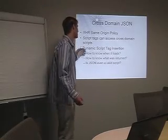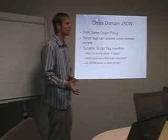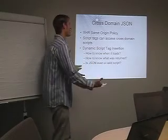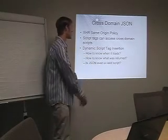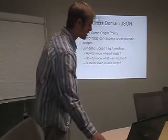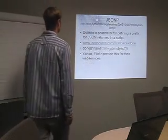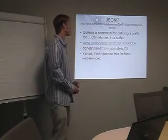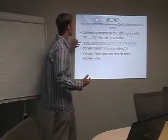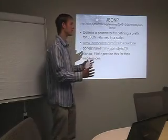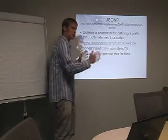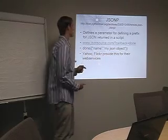Script tags can access across domains, but there's difficulty in using them in that it just loads JavaScript — you don't know when it loaded, you don't know what was in that JavaScript, so by itself it's not terribly useful. The JSONP protocol is basically a definition where we say we want to have a callback parameter, and that callback parameter is going to be prefixed to the JSON object returned by the script.